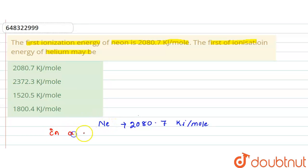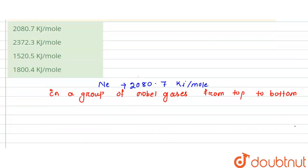from top to bottom, ionization energy decreases.